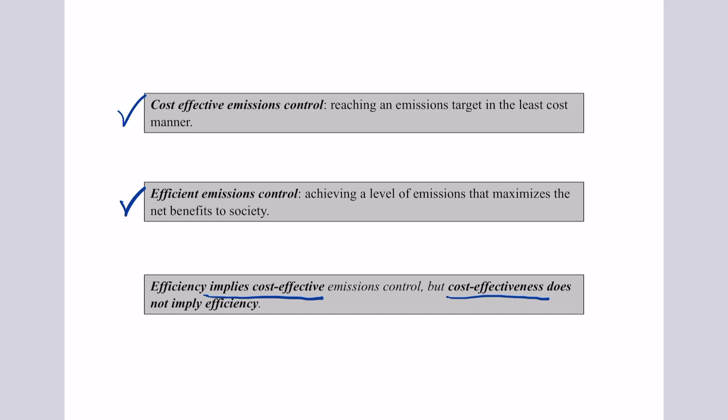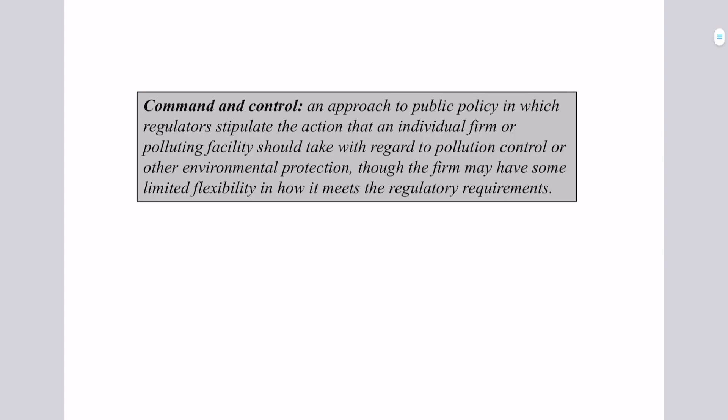You could have an environmental policy that's not based on efficiency but could be based on something like equity concerns. And whatever that environmental target is, you can still reach it in a cost-effective way. The first set of policy options we'll consider are called command and control. Most of the environmental policy experience in this country involves command and control policies, starting with the Clean Air Act in the 1970s. This is an approach where regulators — the government, whether state or federal — stipulate the action that an individual firm or polluting facility can take with regard to pollution control.